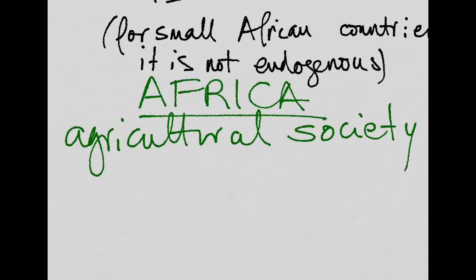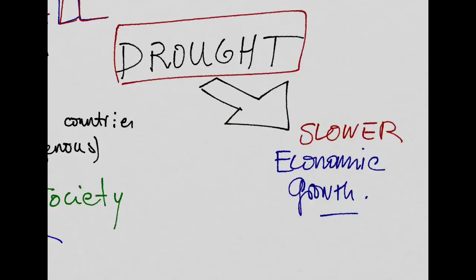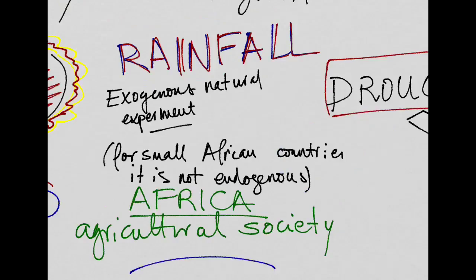Since most of Africa lives out of agriculture, this will have a big effect on economic growth, slowing it down. And also, since there is no possibility for small agricultural societies, such as countries in Africa, to affect their climate directly, we can think of rainfall patterns as being something exogenous, like a natural experiment.